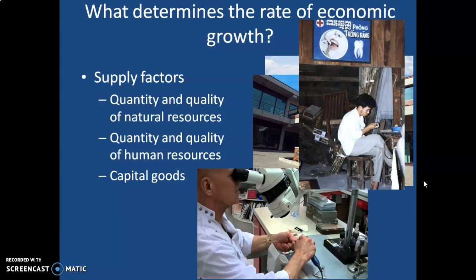And then there are capital goods — the quality of capital used in production is extremely important. These two pictures are basically showing the same activity. One photo I took in Phnom Penh, Cambodia: a gentleman making false teeth using a drill powered by his foot — a foot-pump drill. The other photo shows a man doing the same thing using modern equipment. The capital employed in the modern picture will produce dentures much more quickly and with much higher quality.